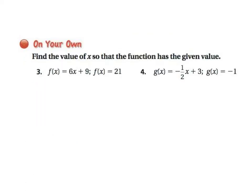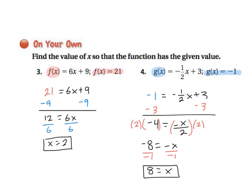Okay, go ahead and pause the video and give these two problems a try. Okay, go ahead and check your work here. So you can see I substituted f of x with 21. So once again, they're telling us the output rather than the input. And then I'm just solving using my inverse operation. Subtract 9 and divide by 6, so you get x equals 2.